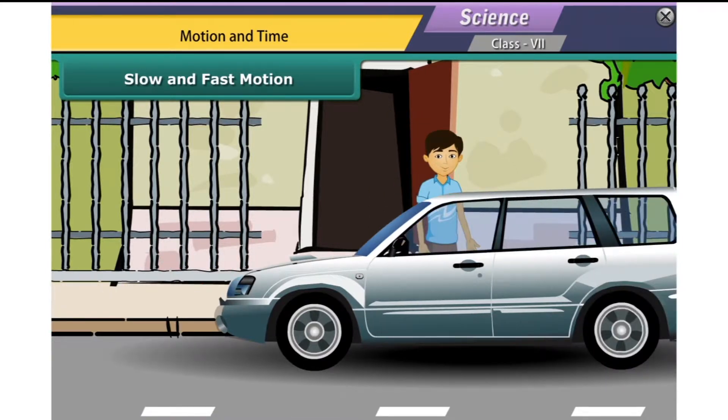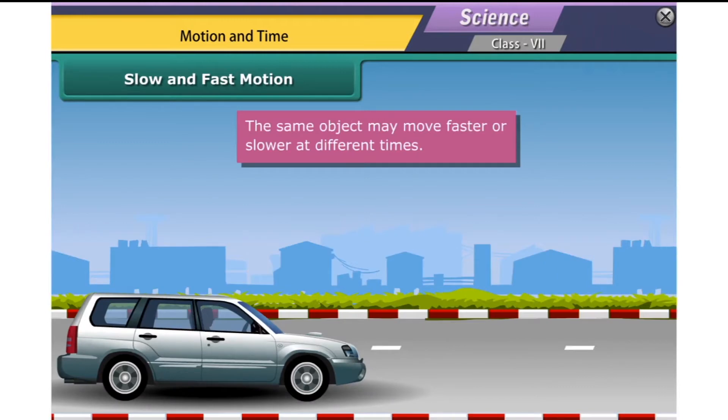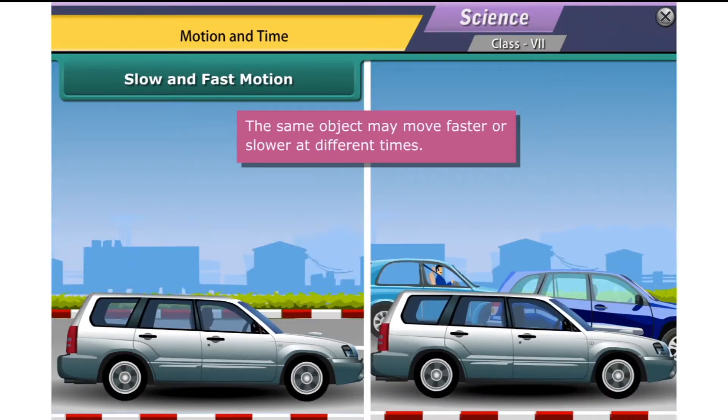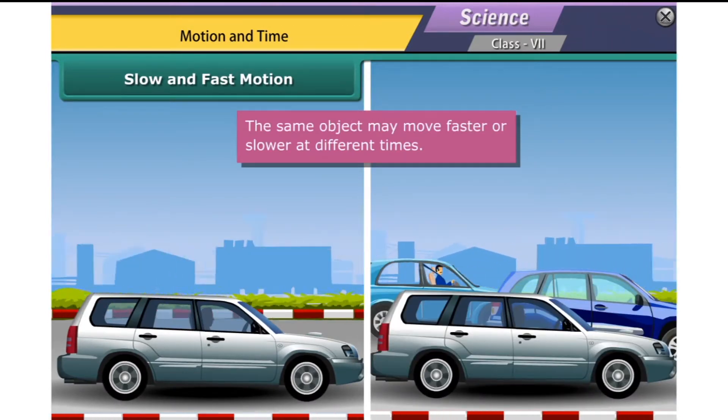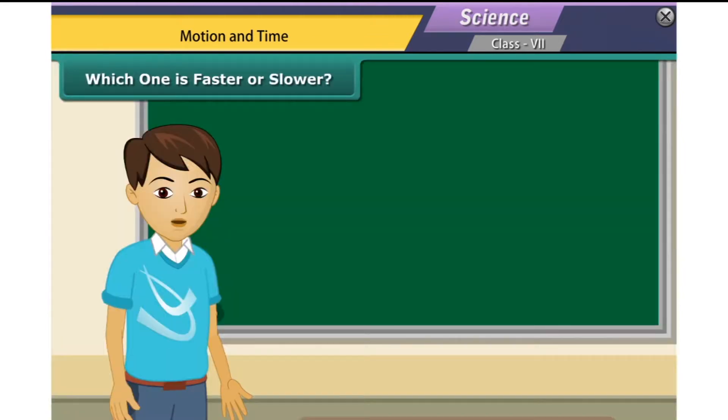So we can say that some objects move faster than others. Now the same taxi moves fast on an empty road and slow on a busy road. Thus the same object can move fast at one time and slow at another time.